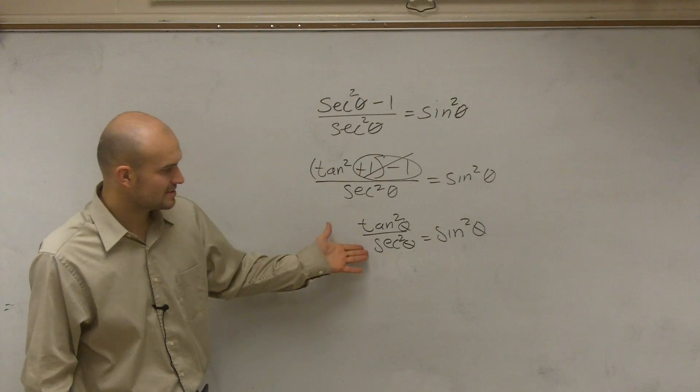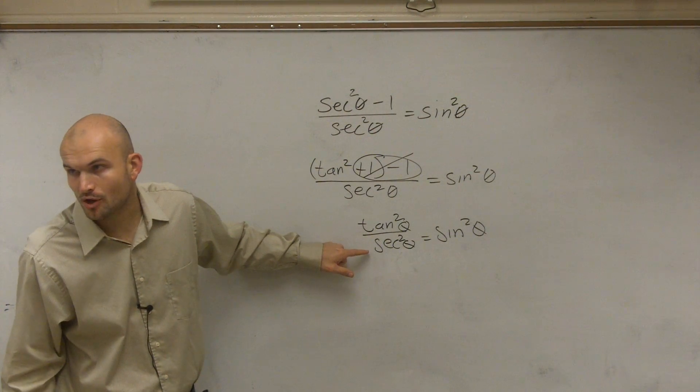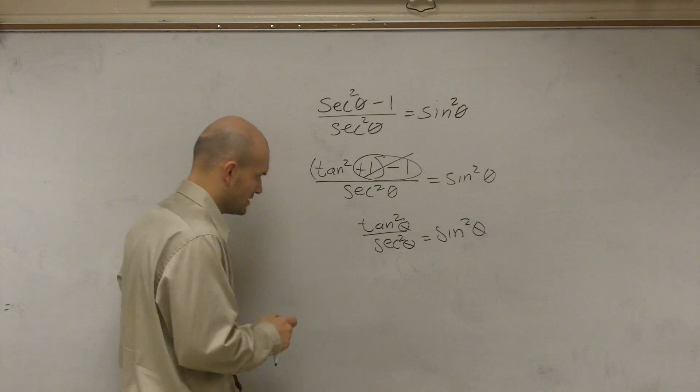Then what you can look at this is saying, all right, well, we need to get secant off the bottom so we can multiply by the reciprocal of secant, which is cosine.